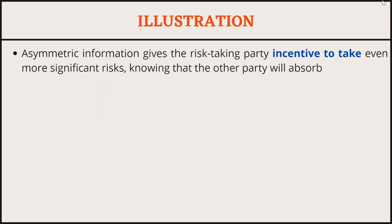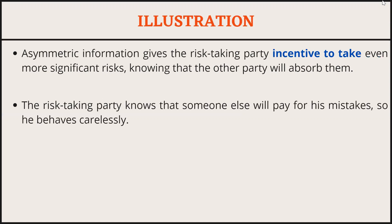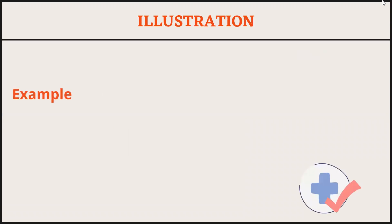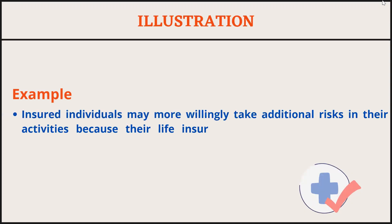Asymmetric information gives the risk-taking party incentive to take even more significant risks, knowing that the other party will absorb them. In simple words, the risk-taking party knows that someone else will pay for their mistakes, so they behave carelessly — and that is the idea of moral hazard.